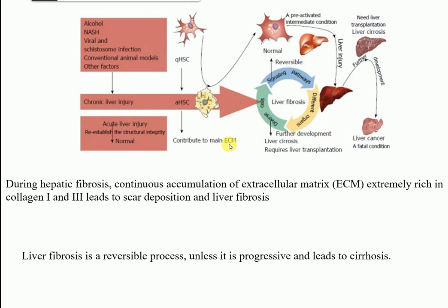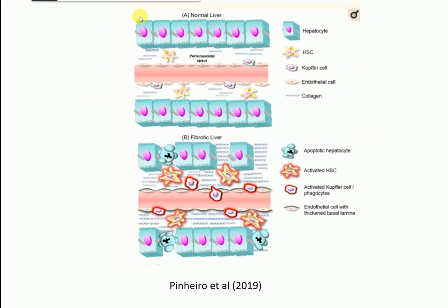These activated hepatic stellate cells contribute to increased synthesis and accumulation of extracellular matrix. During hepatic fibrosis, continuous accumulation of extracellular matrix - particularly collagen types I and III - leads to scar deposition and liver fibrosis. Remember: liver fibrosis is a reversible process, but when it reaches cirrhosis it becomes irreversible. The key point is that quiescent hepatic stellate cells get converted into activated hepatic stellate cells, which drive ECM accumulation.